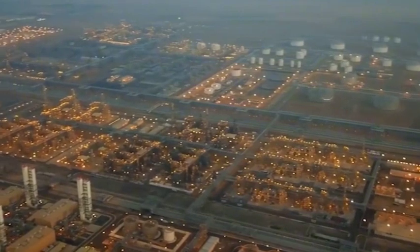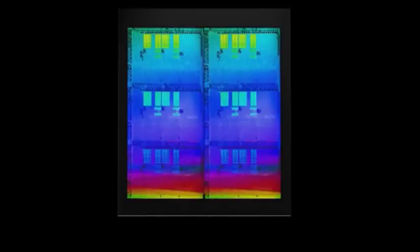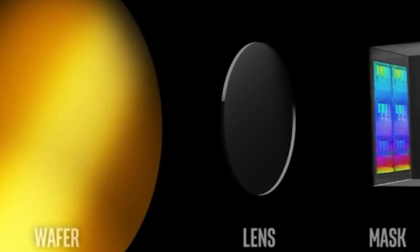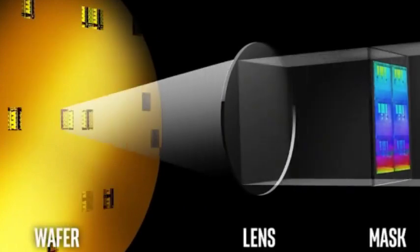As a world-renowned lithography machine company, ASML has won a lot of market share with EUV lithography machines and has surpassed Nikon and Canon to become the leading lithography machine company.